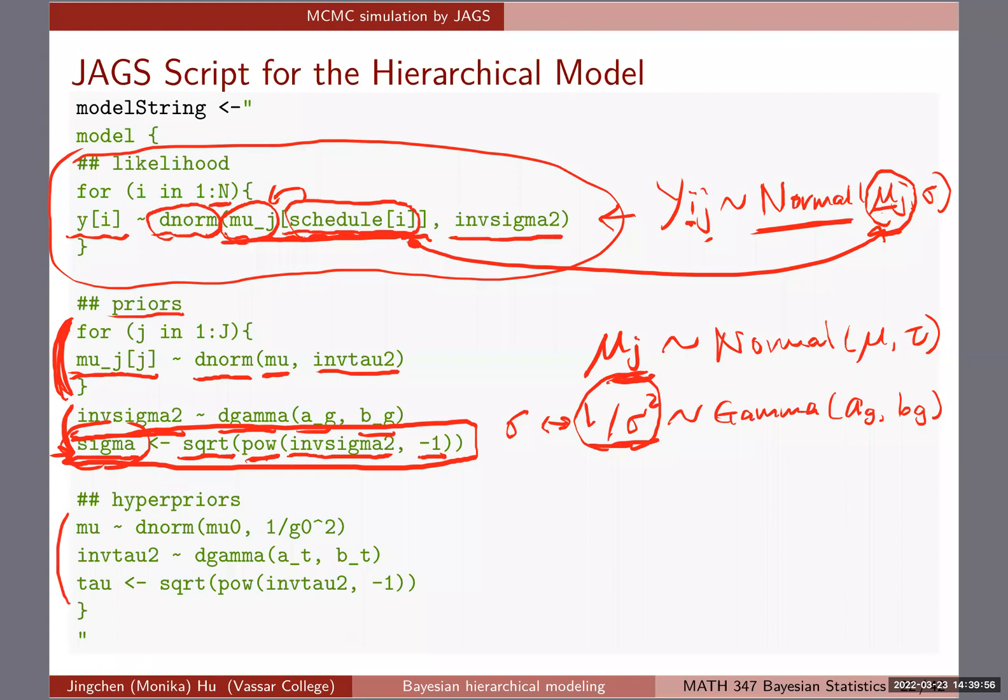And then don't forget, we also have the prior for sigma. So we know that one over sigma squared follows a gamma. I think we use the notation A, yeah, I'm just going to follow the code over here. A and B_g over here. G stands for gamma. So you have this one over sigma squared. So we call it inverse sigma 2 follows a dgamma, A_g, and B_g. We're going to pass those numbers later. And then if you ever want to track sigma instead of 1 over sigma squared, then you can have this one extra line over here.